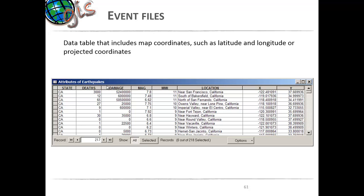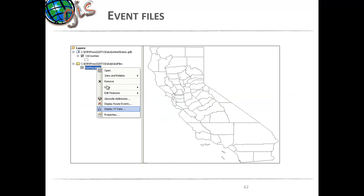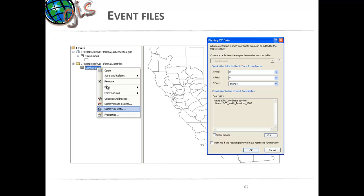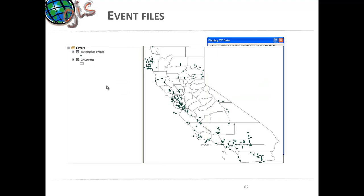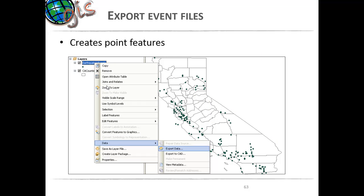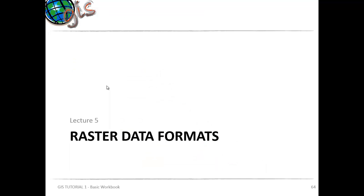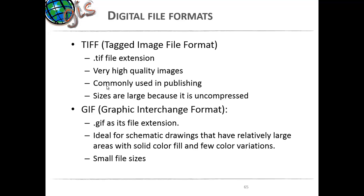Event files are data tables that include latitude and longitude — essentially x and y fields — which can be displayed as x/y data, creating a point layer. We already saw how to create a centroid from an x/y table. Event files are usually temporary datasets and need to be exported to make them permanent.